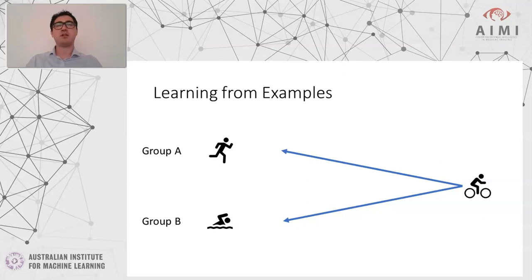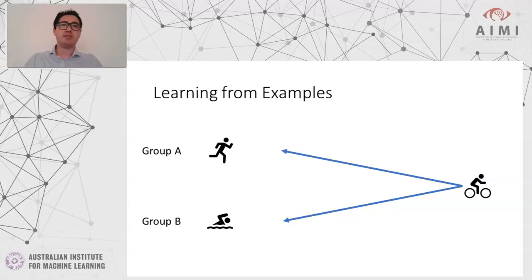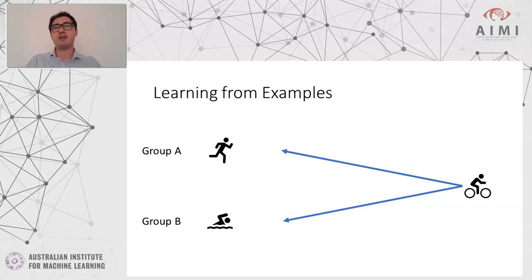So just stop this video for a moment and think about it. One could arguably say that group B is related to water sports and group A is not. So we could say that we're going to put this guy on this bike on group A.